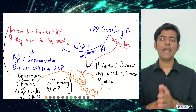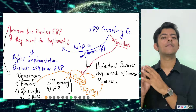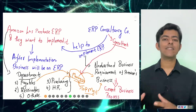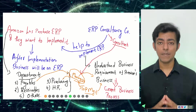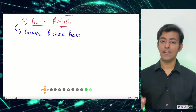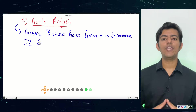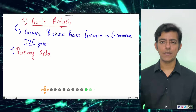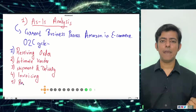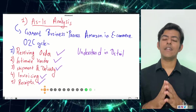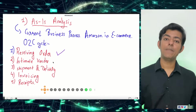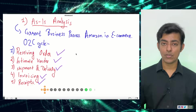In the ERP consultancy company there will be consultants, and there will be a meeting between these consultants and the managers. During this meeting, the ERP consultant will understand the business requirements from the managers. Along with managers, top executives of the company will sit with the consultant to understand in detail how Amazon is doing their current business — this is also called AS-IS analysis. For example, Amazon is primarily into e-commerce, so they receive orders from customers, process them by intimating vendors, and the vendor creates an invoice, ships the goods, delivers to the customer, and the customer makes payment.